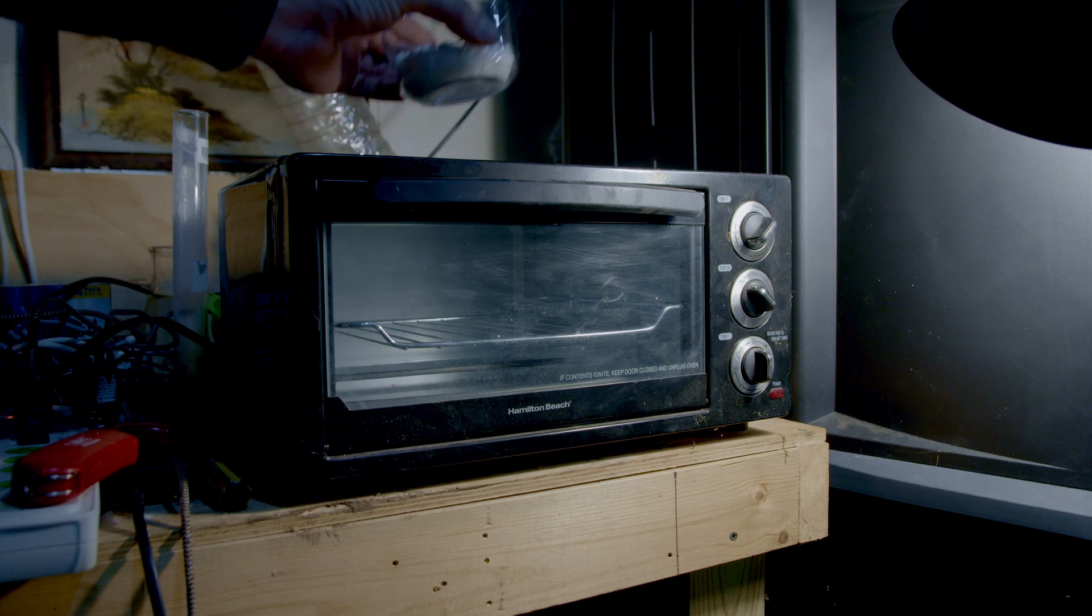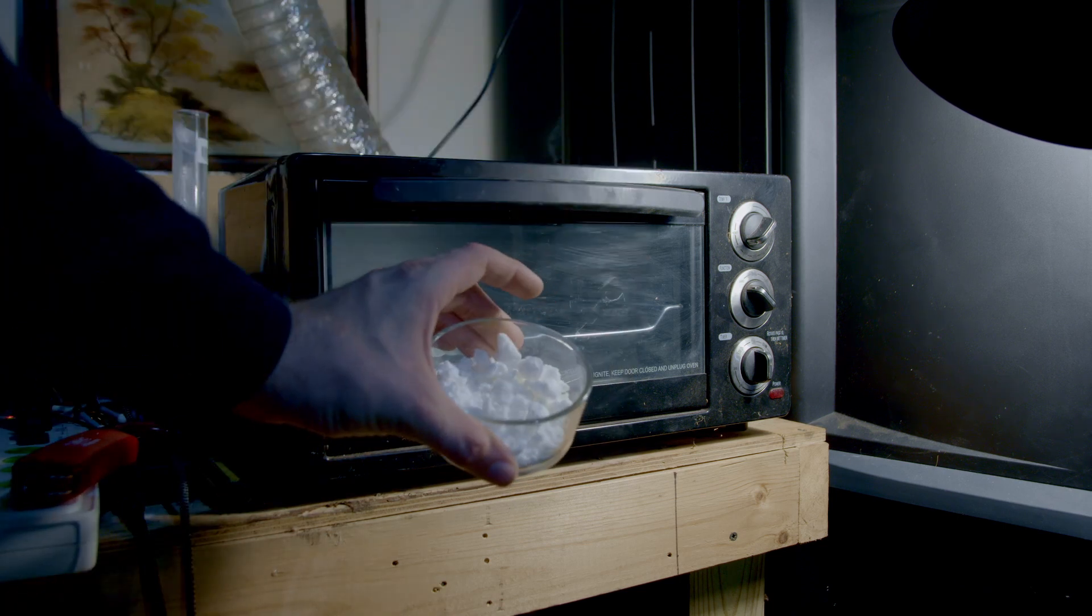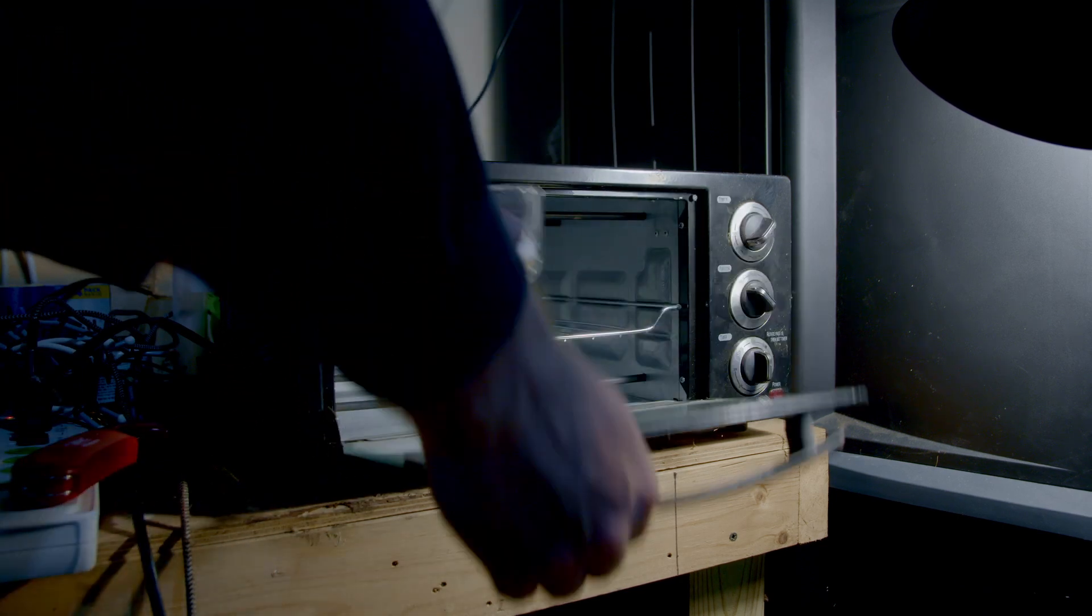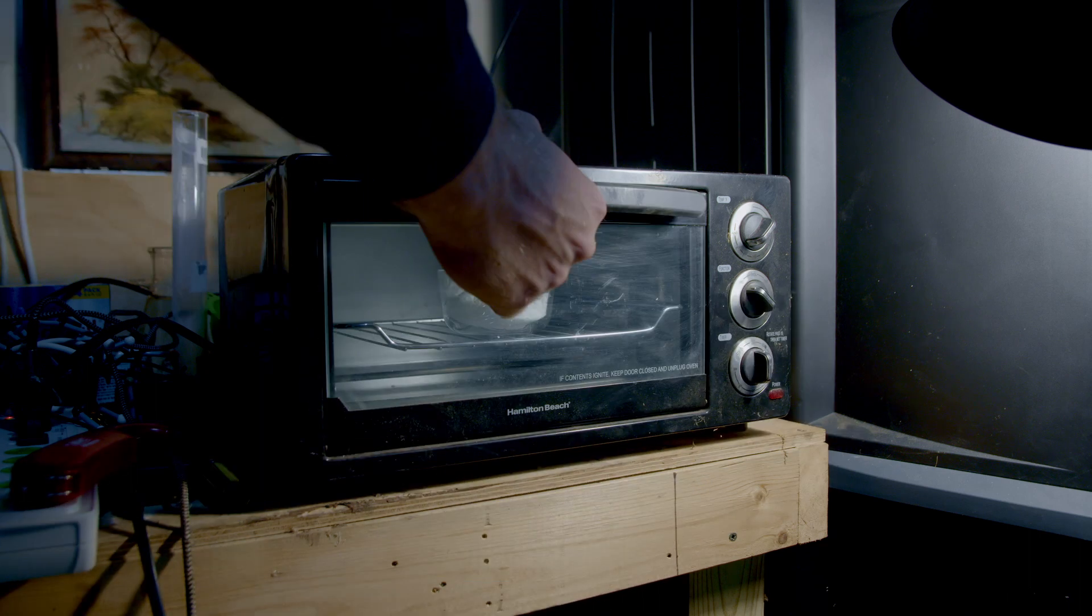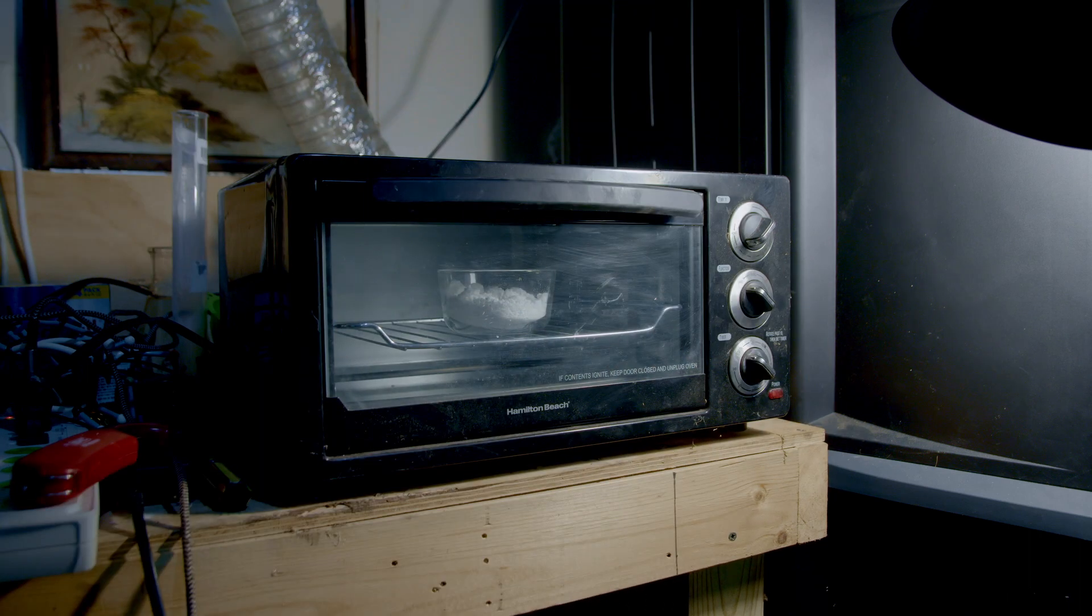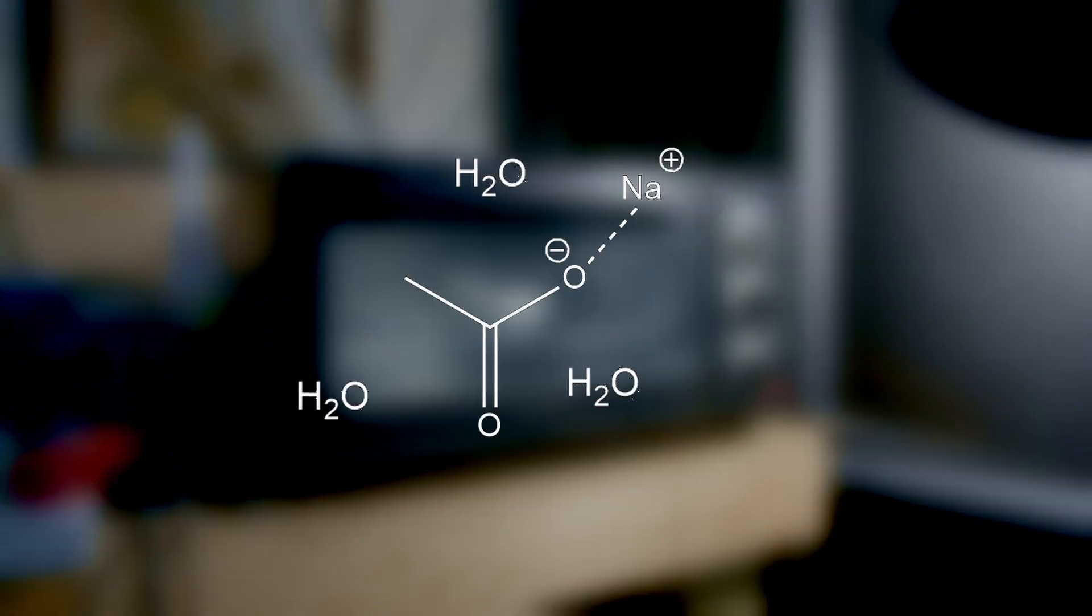And from there we add the sodium acetate crystals to a little dish and we heat them for several hours at 300 degrees. We do this because the sodium acetate actually holds onto water in a form called sodium acetate trihydrate. If we heat it up for long enough we can drive the water off.